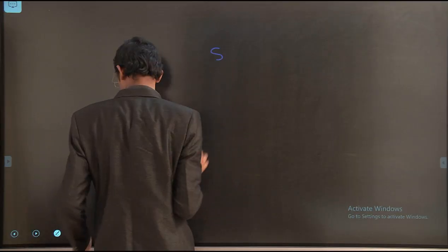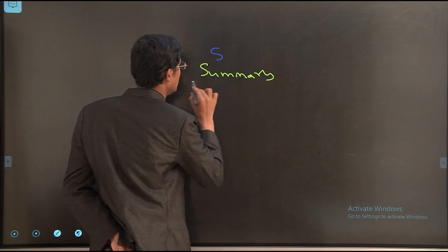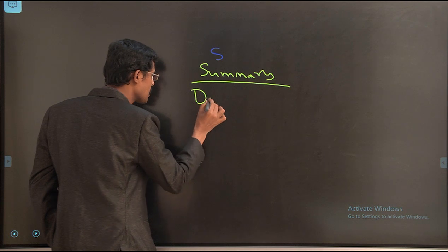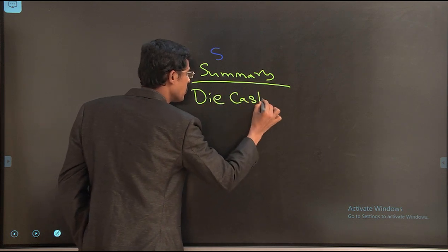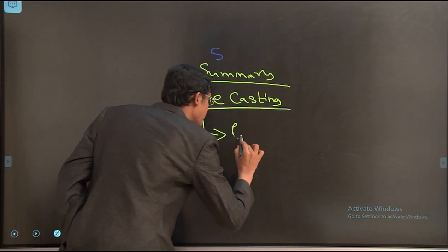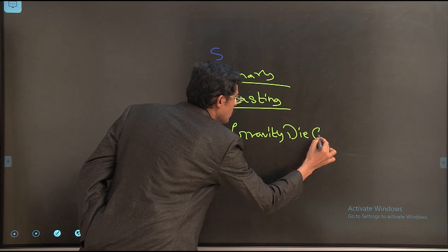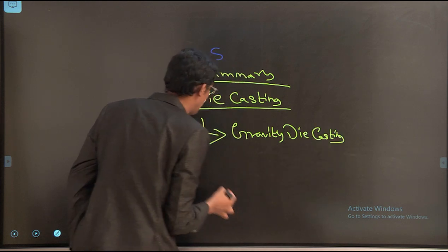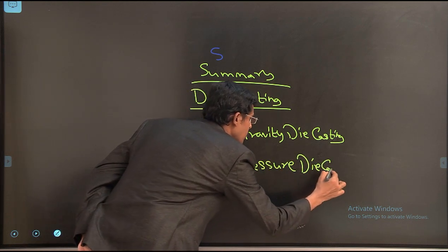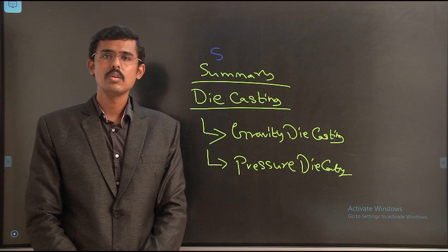Summary of the session: we discussed types of casting processes and focused on die casting. We covered gravity die casting (permanent mold casting) and pressure die casting (cold chamber and hot chamber types). The remaining part of this subject will be covered in the next session. Thank you.